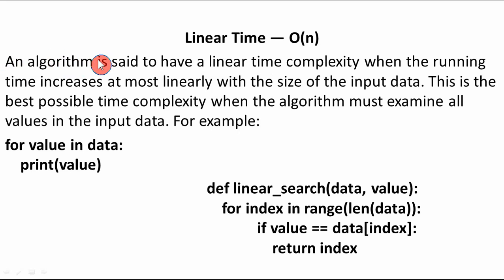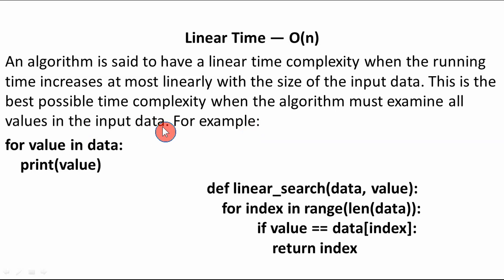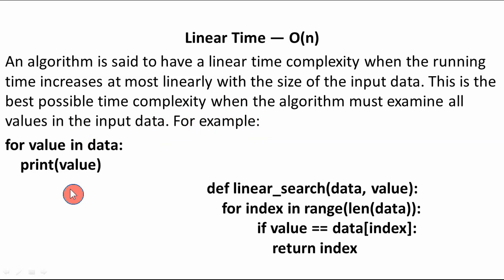For linear time complexity O(n): an algorithm has linear time complexity when the running time increases at most linearly with the size of the input data. As n increases, the number of operations increases in the same proportion. This is the best possible time complexity when the algorithm must examine all values in the input data — in the worst case, operations are exactly proportional to n.